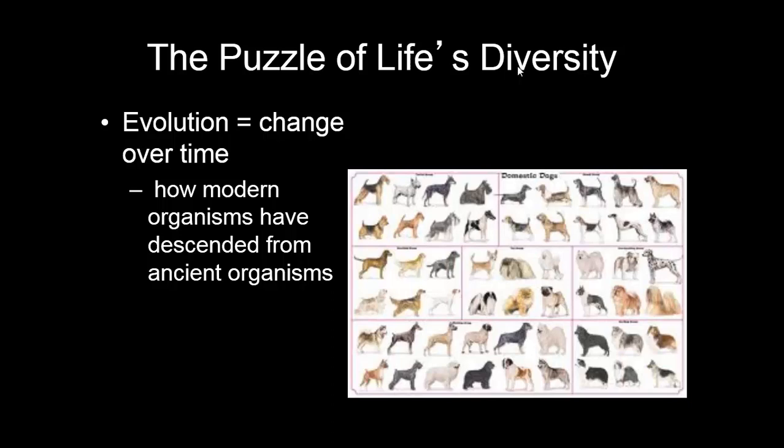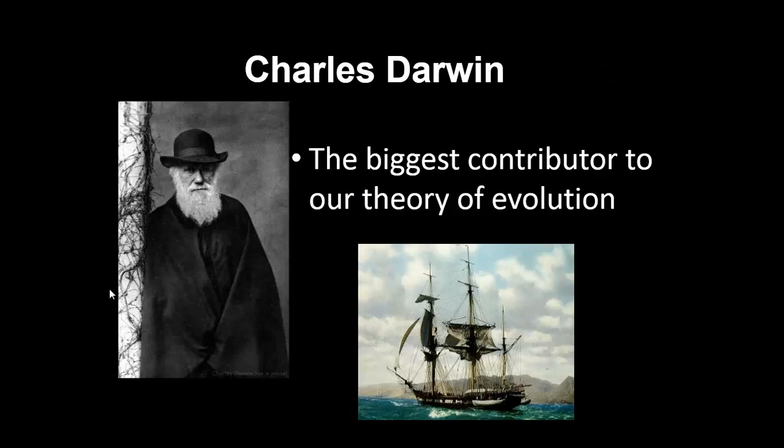Evolution simply means change over time. In terms of biology, it means how modern organisms have descended or come from ancient organisms. To the right you can see a picture of dogs — that's an example of not a natural occurrence, where instead we've actually modified dogs, but they all descend from one common ancestor, which would be a wolf. All of these different forms have been derived by man by selecting the traits we want. If we want a dog that's short and furry, we take short and furry dogs and breed them until those traits are more common. Over time, the form will change.